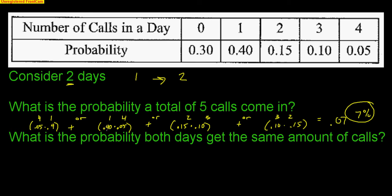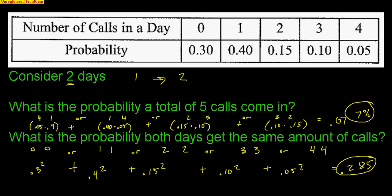Next one is what is the probability both days get the same amount of calls? That would be 0 the first day, 0 the second day, or 1 the first day, 1 the second day, or 2 and 2, or 3 and 3, or 4 and 4. I'm going to make this easier by just doing 0.3 squared, 0.4 squared, 0.15 squared, 0.10 squared, or 0.05 squared. Doing this on your calculator, you should come up with a final answer of 0.285, or 28.5% chance that you get the same amount of calls on both days. Pretty easy problem there, but I just want to make sure you guys truly understand how to work with these probability models.